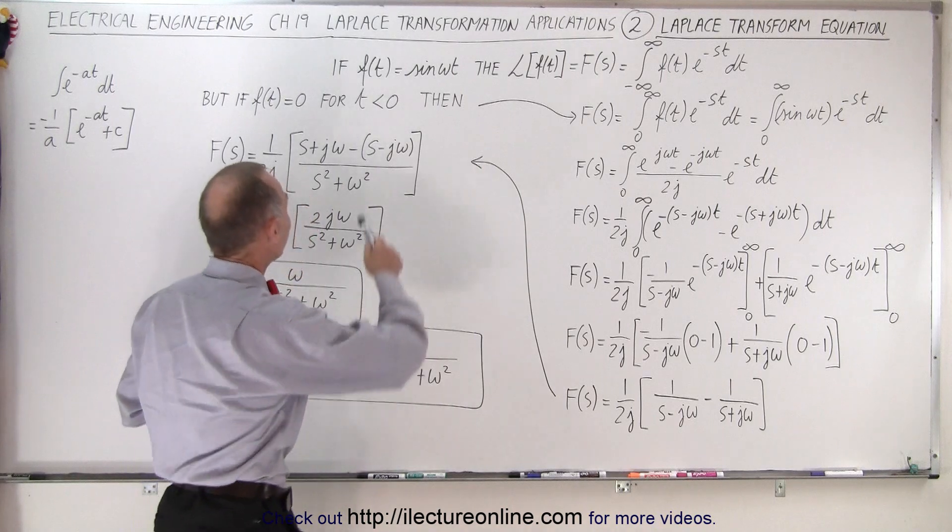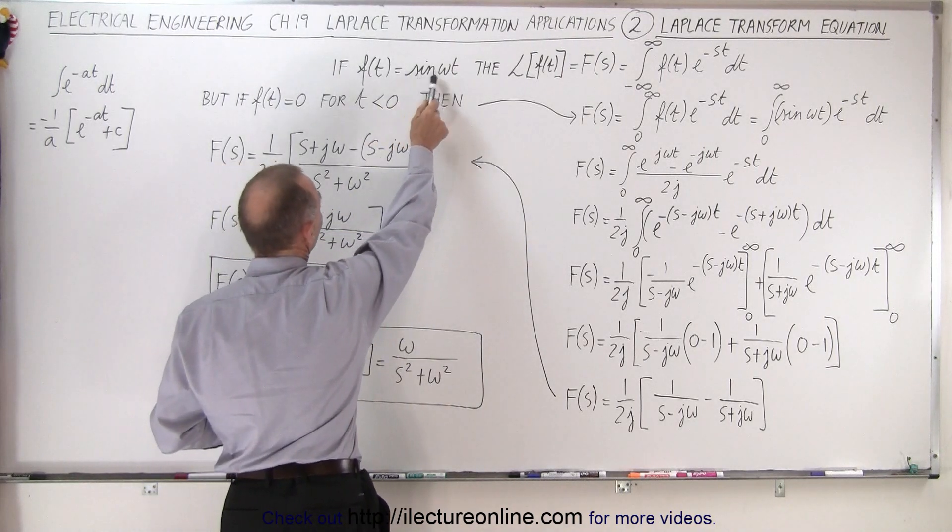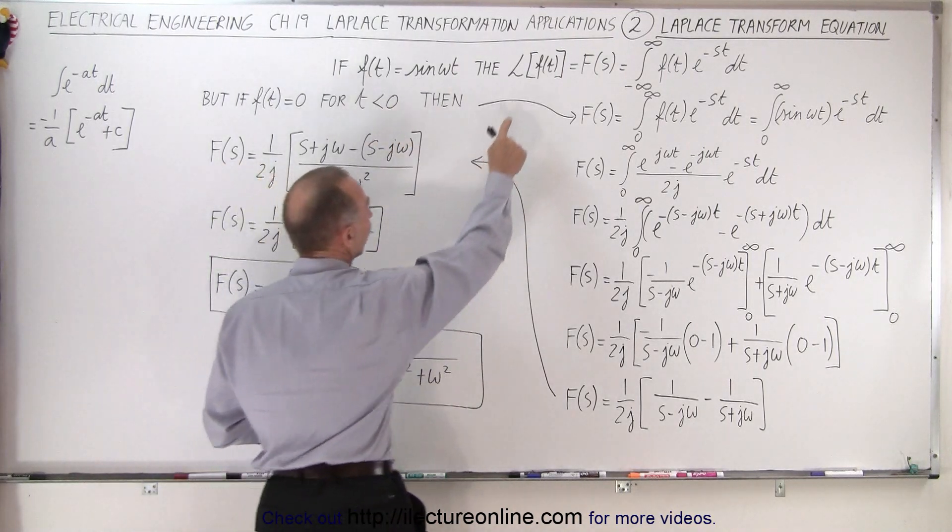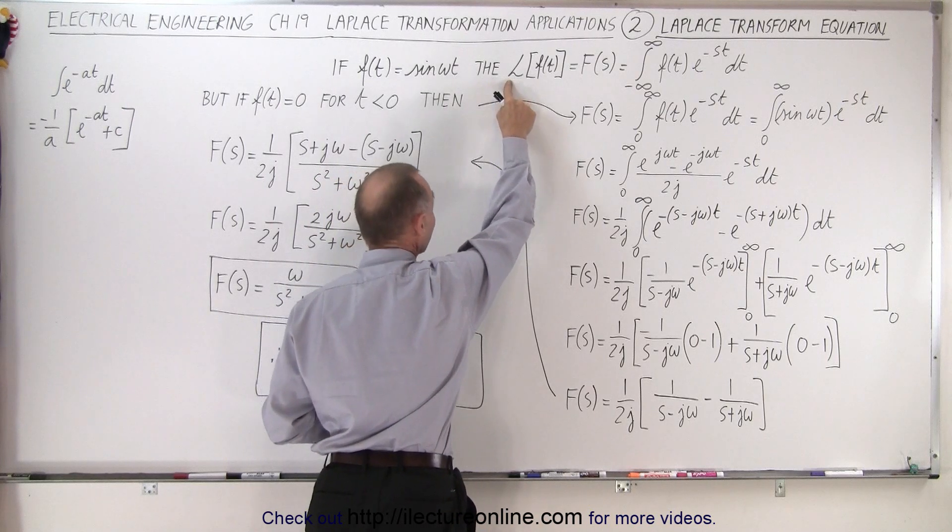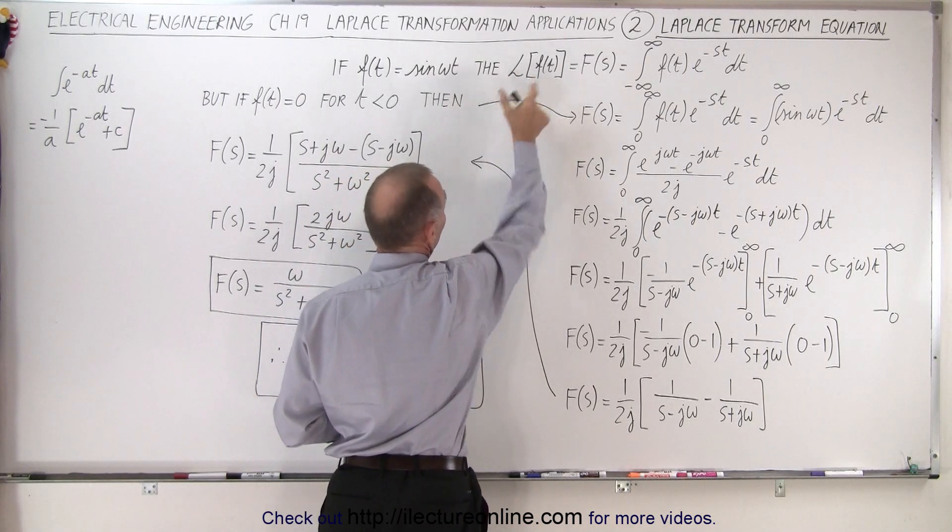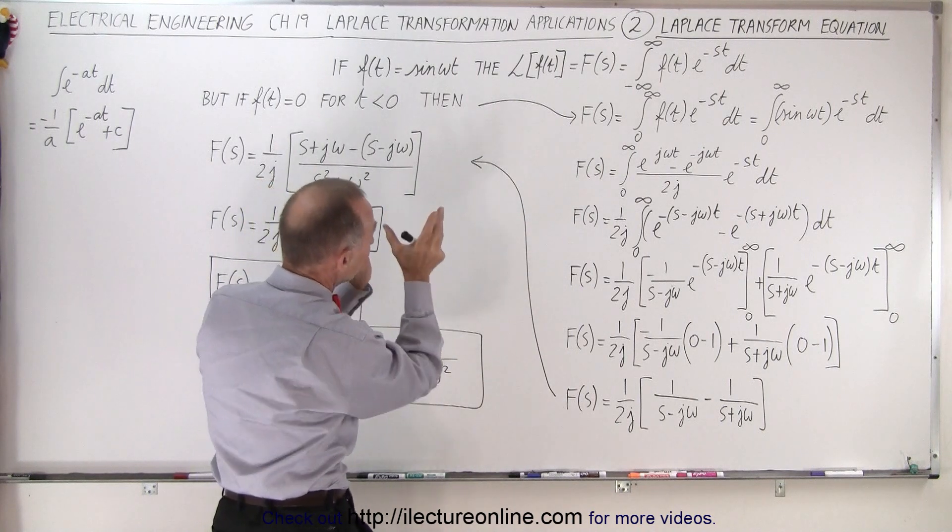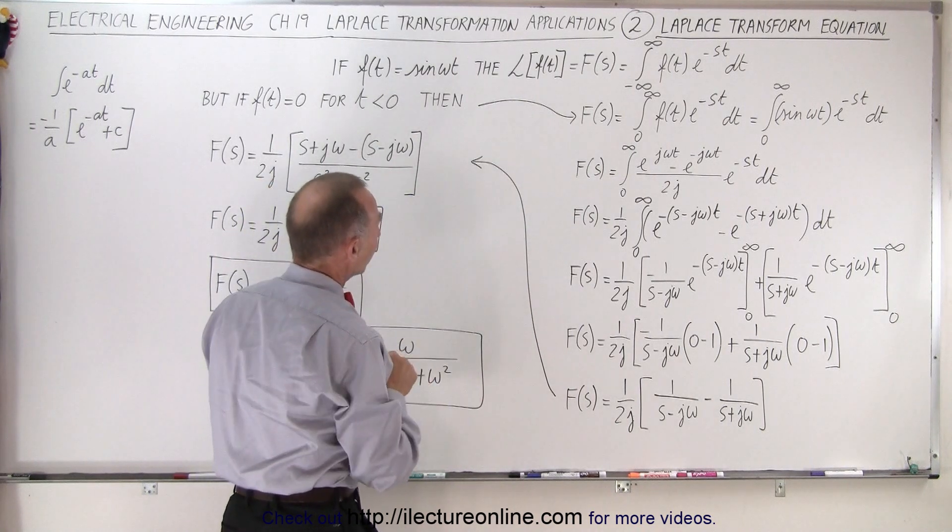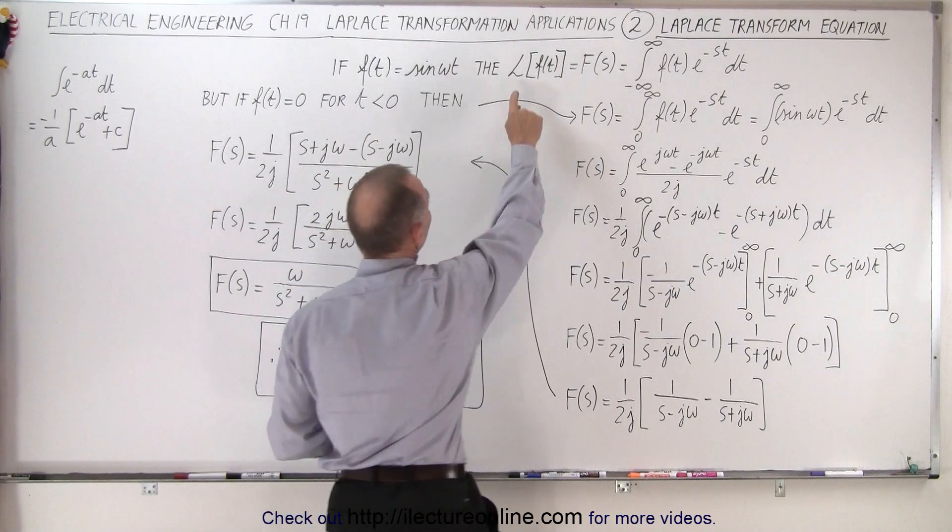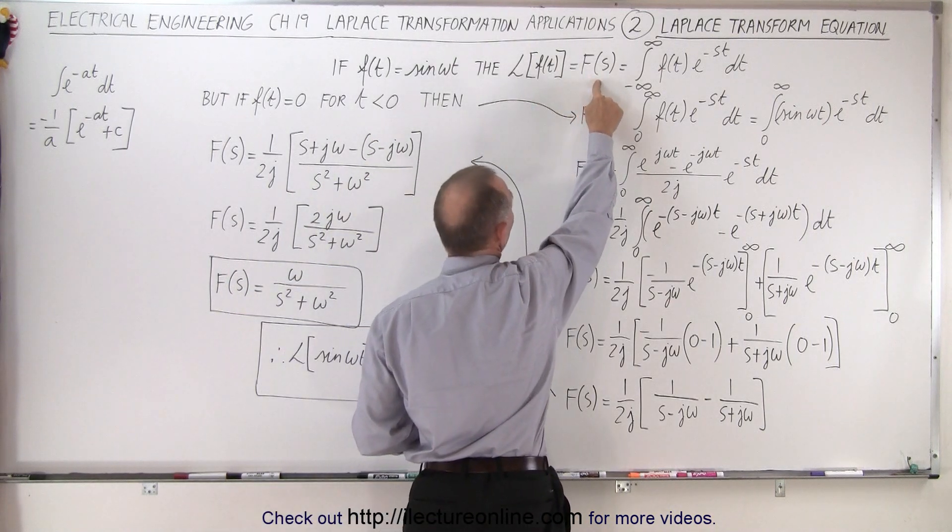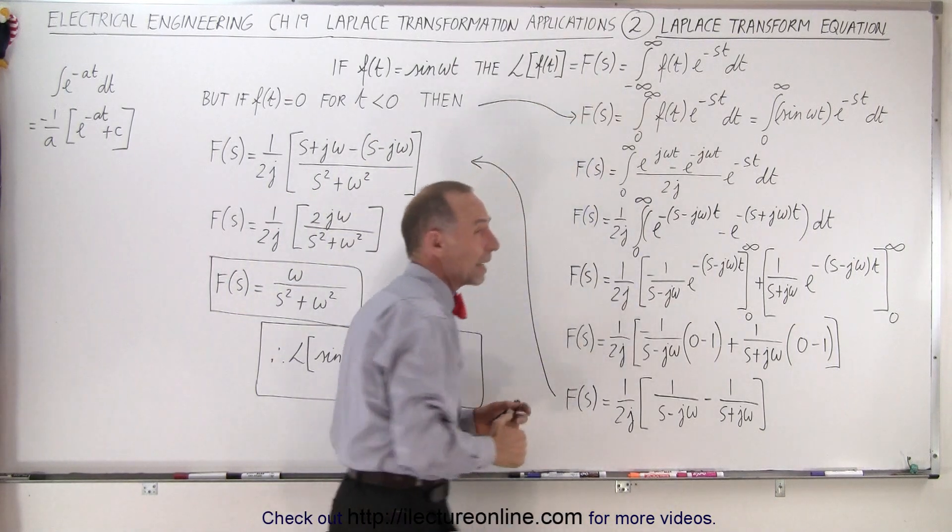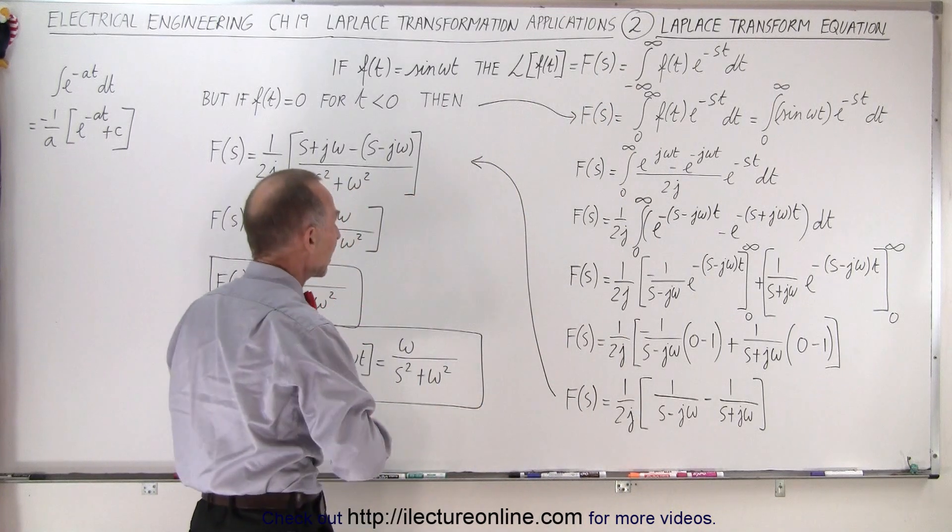So let's say that we have a function and the function is equal to the sine of omega t. And we're trying to find the Laplace transform of that particular function, and this is how you write it. We use the letter L, script L, times in the brackets we have f of t, and that then converts it into the s domain or the frequency domain depending upon what kind of application we have.